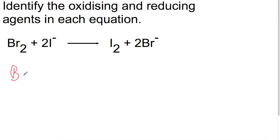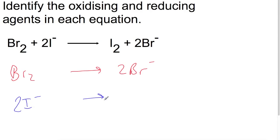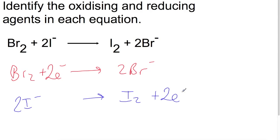Starting with bromine: Br₂ becomes 2Br⁻. For iodine: 2I⁻ becomes I₂. Adding electrons to balance the charge: Br₂ has no charge and 2Br⁻ has a charge of two minus, meaning bromine is gaining two electrons to break the bromine bond and form bromide ions. The iodide ions lose two electrons to form iodine — these electrons are transferred to the bromine.